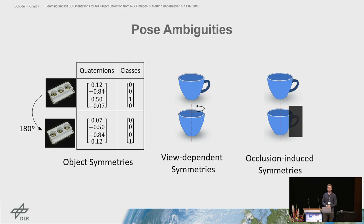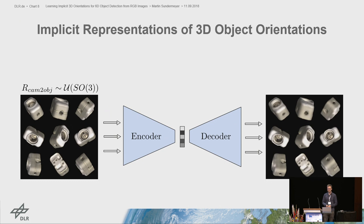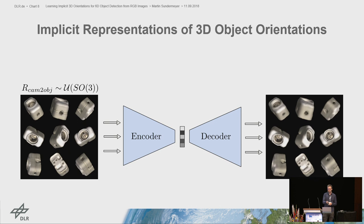To tackle these issues, we simply do not use pose labels during training. Instead, we encode synthetic object views uniformly sampled from SO3 using an autoencoder scheme. The goal is to learn an implicit representation of 3D object orientations in the latent space. To investigate what we actually encode, we did some minimal experiments.